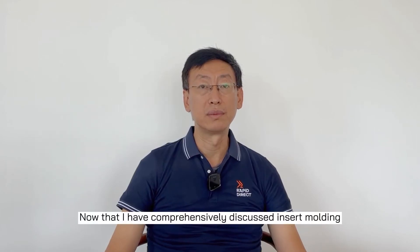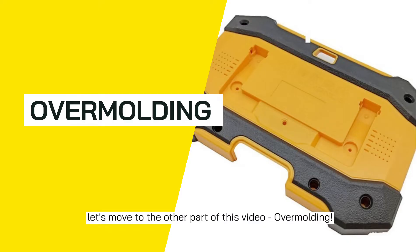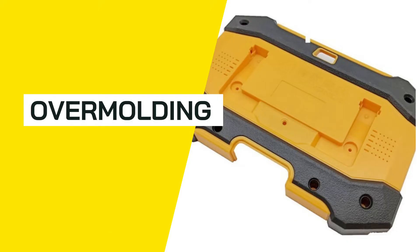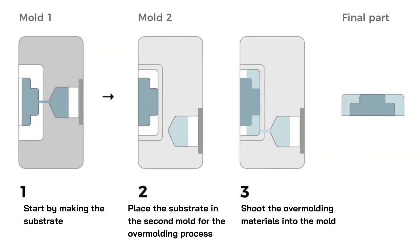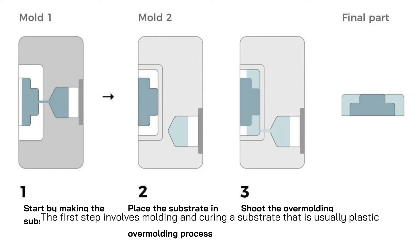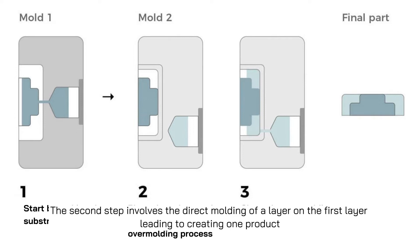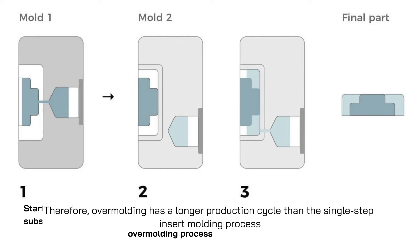Now that I've discussed insert molding, let's move to the other part of this video: overmolding. Overmolding is a multi-step process where one or more components are molded over the top of another part or substrate. There are two necessary steps: the first step involves molding and curing a substrate that is usually plastic; the second step involves the direct molding of a layer on top of the first layer, leading to the creation of one product. Therefore, overmolding has a longer production cycle than the single-step insert molding process.